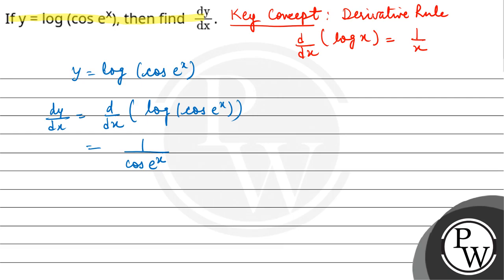Then differentiation of cos exponential x: minus sin exponential x, and exponential x's differentiation would be exponential x, and x's differentiation would be 1.